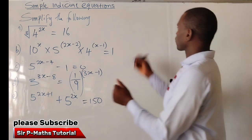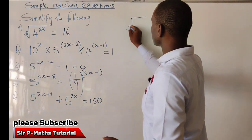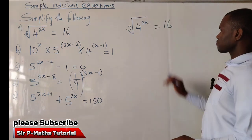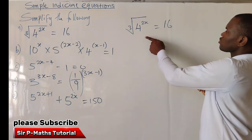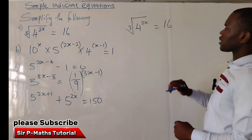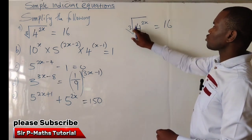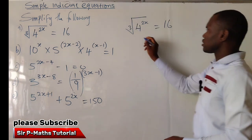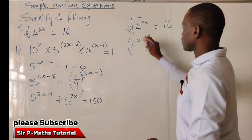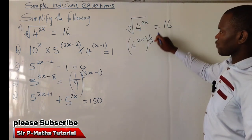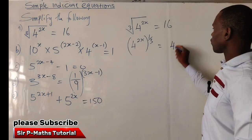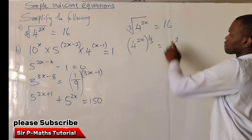Let's start with the first one. I have the cube root of 4 raised to power 2x, equal to 16. Let's simplify: 16 can be reduced to its index form with base 4. We can expand the cube root of 4 to become a power of 1 over 3 — that is, 4 raised to power 2x, all raised to the power of 1 over 3. This is equal to 16, which reduces to 4 raised to power 2.